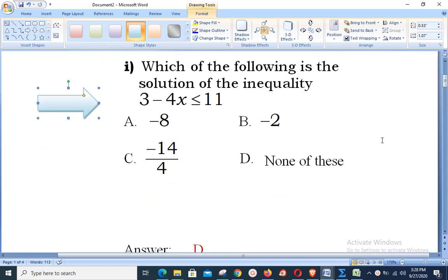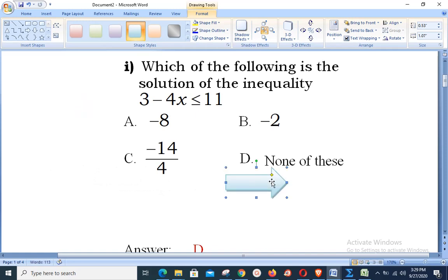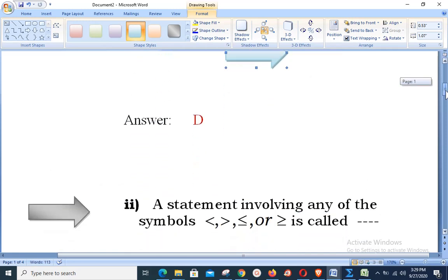For the solution, we will shift minus 4x on the right hand side, we will shift 11 on the left hand side. We will be having minus 8 less or equal to 4x. We need to divide it by 4 on both sides. Our result will be x is greater or equal to minus 2. No such result is given, so option D is my correct option in this case.